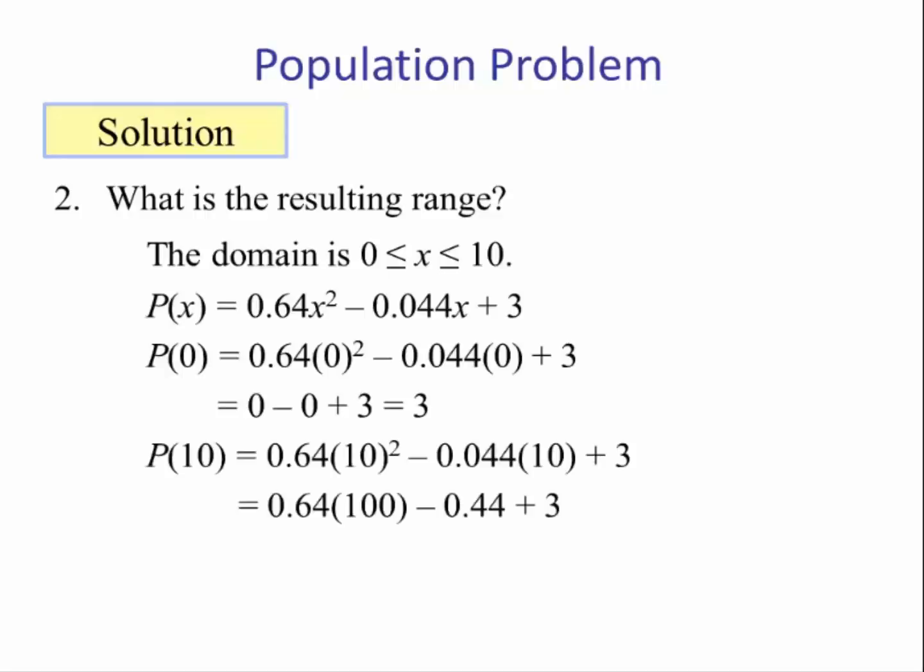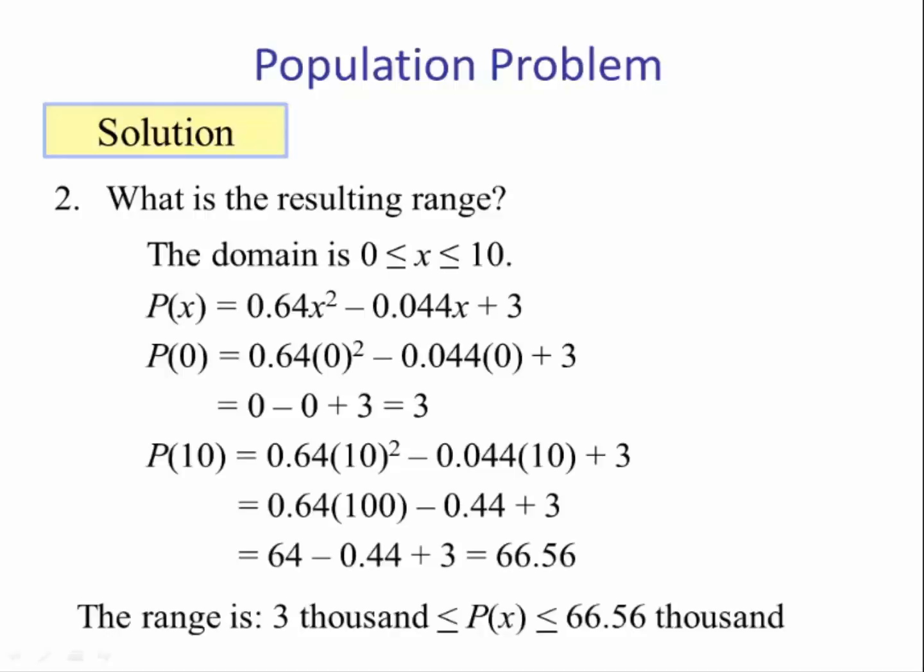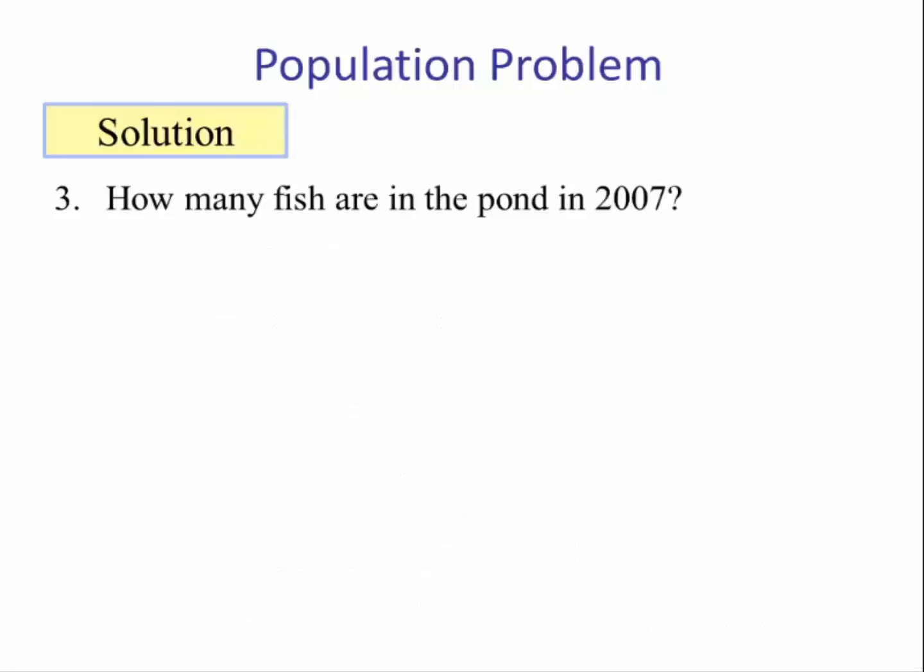So we say the range is between 3,000 and 66,560. Number three: how many fish are in the pond in 2007? Well, 2007 corresponds to x being equal to 0, and we found that value to be 3. So there's 3,000 fish according to the model in 2007.